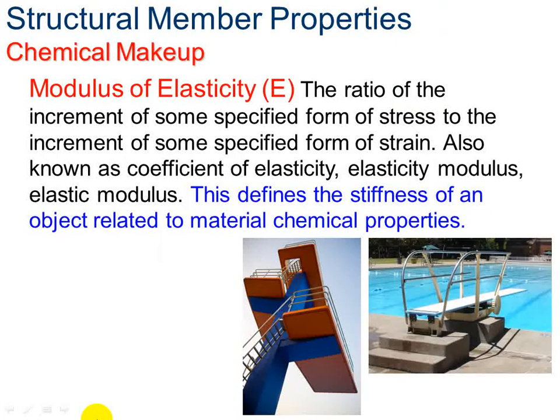Another part that's important in considering structural member properties is the chemical makeup of the materials that you have made your object from. One of them is called the modulus of elasticity. The ratio of the increment of some specified form of stress to the increment of some specified form of strain is the modulus of elasticity. This defines the stiffness of an object related to the material chemical properties.